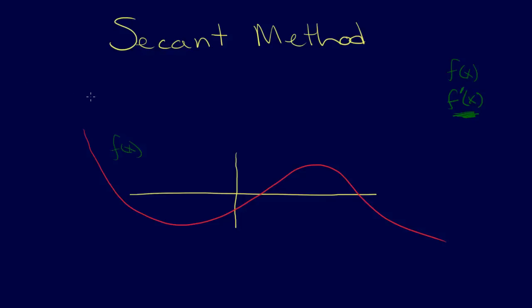That's where the secant method comes in. The secant method overcomes this by using not one, but two initial guesses. It uses two initial guesses, but the difference between the secant method and the bracketing methods is that the two initial guesses do not have to bracket the root. We'll call those two guesses x0 and x1.